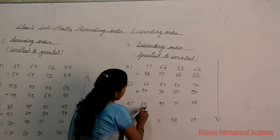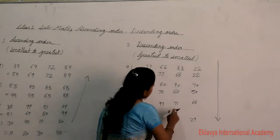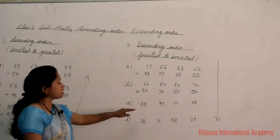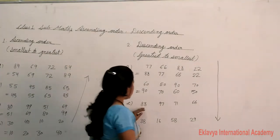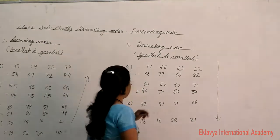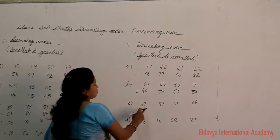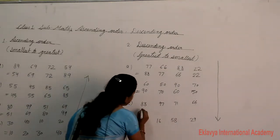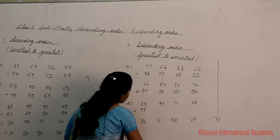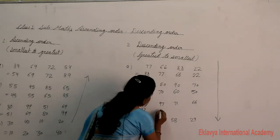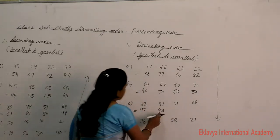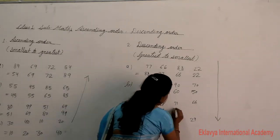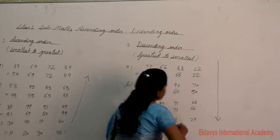Next example: 83, 97, 71, and 66. In descending order we choose the biggest number first. The biggest number is 97. After 97 comes 83, then 71, and then 66.